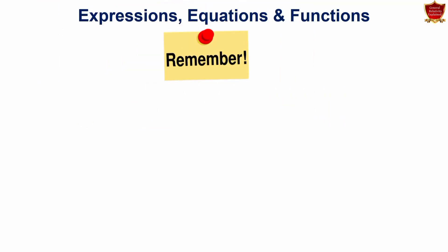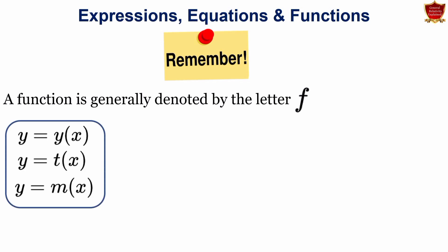Now, one thing this is very important. Let us remember that function is often denoted by the letter f. So if you find in a textbook that function f does this, that or the other, you should not be astonished. You will also see often functions are written as this. y equals to y of x, y equals to t of x and y equals to m of x. So all these three meanings are the same which means that y is a function of x.